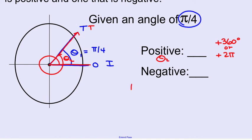We take pi over 4 plus 2 pi. I'm going to create a like fraction. Pi over 4 is the same thing as 8 pi over 4, so 8 pi over 4 plus 1 pi over 4 is 9 pi over 4. One positive coterminal angle to pi over 4 is 9 pi over 4. There's my red angle.